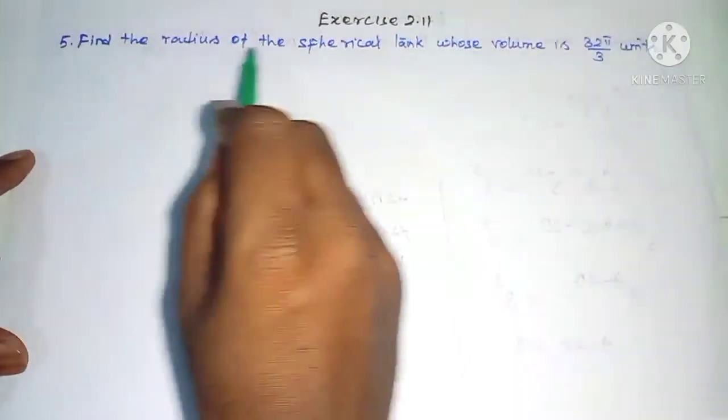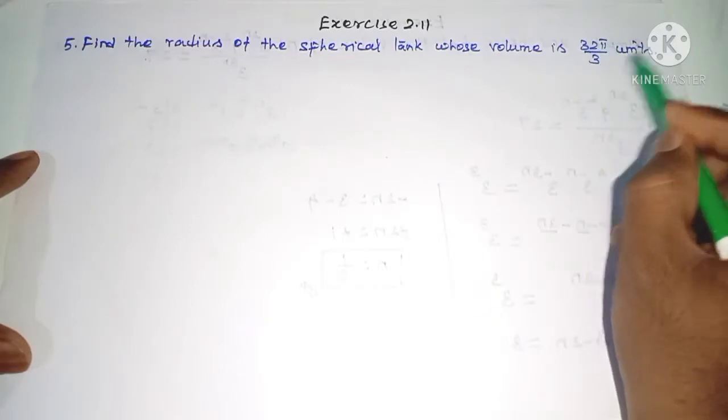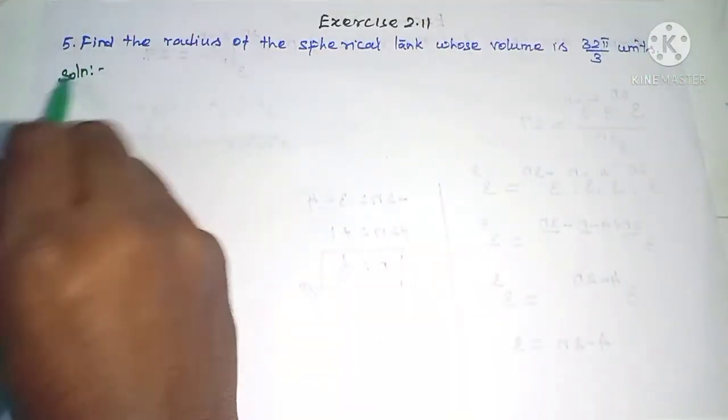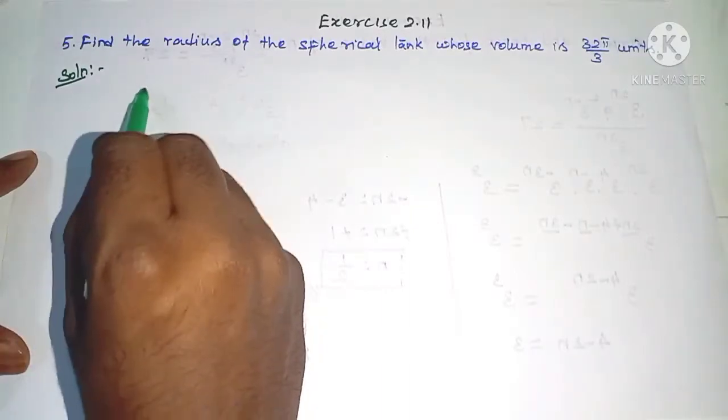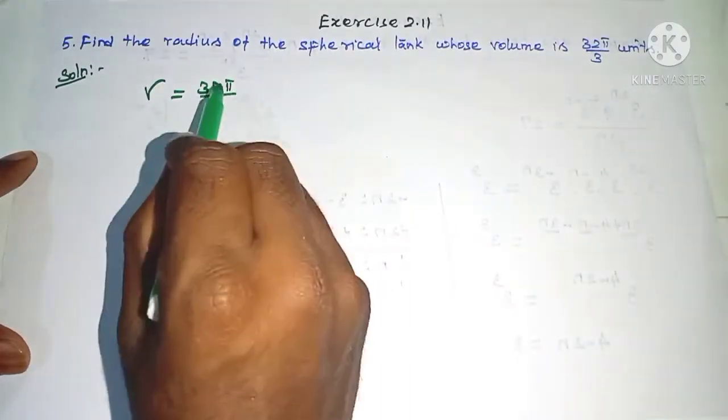Question number 5: Find the radius of the spherical tank whose volume is 32π/3 units.